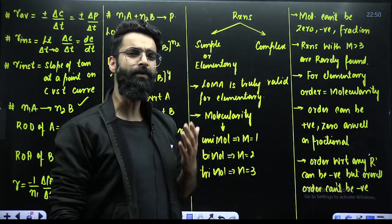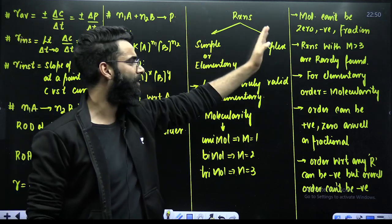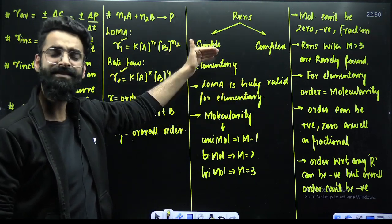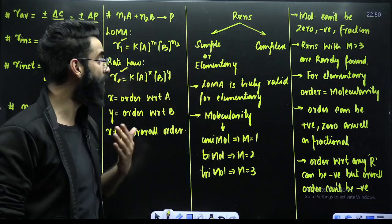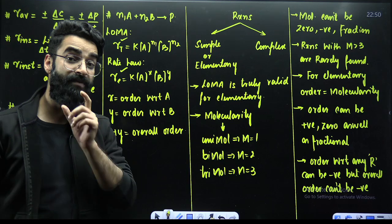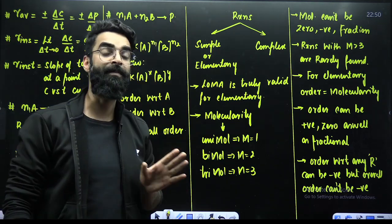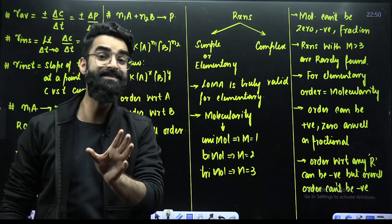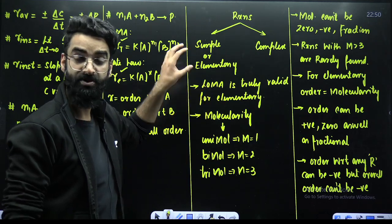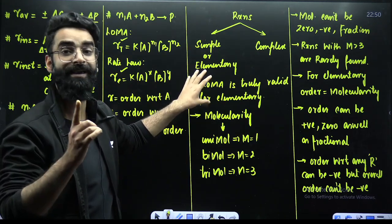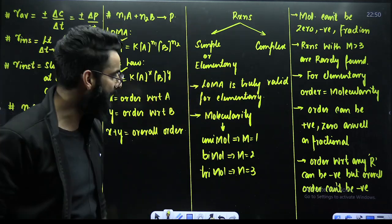From a chemical kinetics perspective, reactions are classified into two types: simple or elementary reactions, which are completed in a single step, and complex reactions, which are completed in more than one step. For elementary reactions, theoretical rate and experimentally determined rate come out to be equal, meaning X equals N1 and Y equals N2. So for elementary reactions, whether you use the law of mass action or rate law, you get the same value.